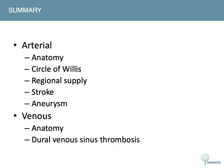To summarize: we covered the arterial and venous vasculature of the brain. In the arterial system, we looked at the anatomy and the Circle of Willis, the regional supply of the anterior, middle, and posterior cerebral arteries, and clinically focused on stroke, aneurysm, and subarachnoid hemorrhage. For the venous system, we covered the anatomy and dural venous sinus thrombosis.